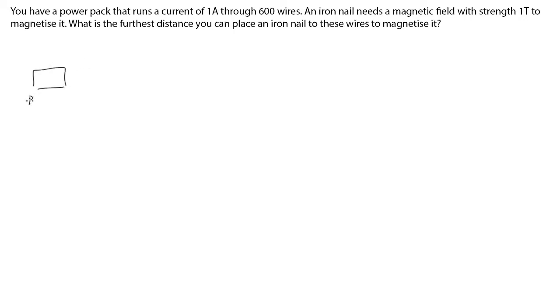Say you had an iron nail, a ferromagnetic material that is not magnetized. It needs an external magnetic field of about 1 tesla to become a permanent magnet.